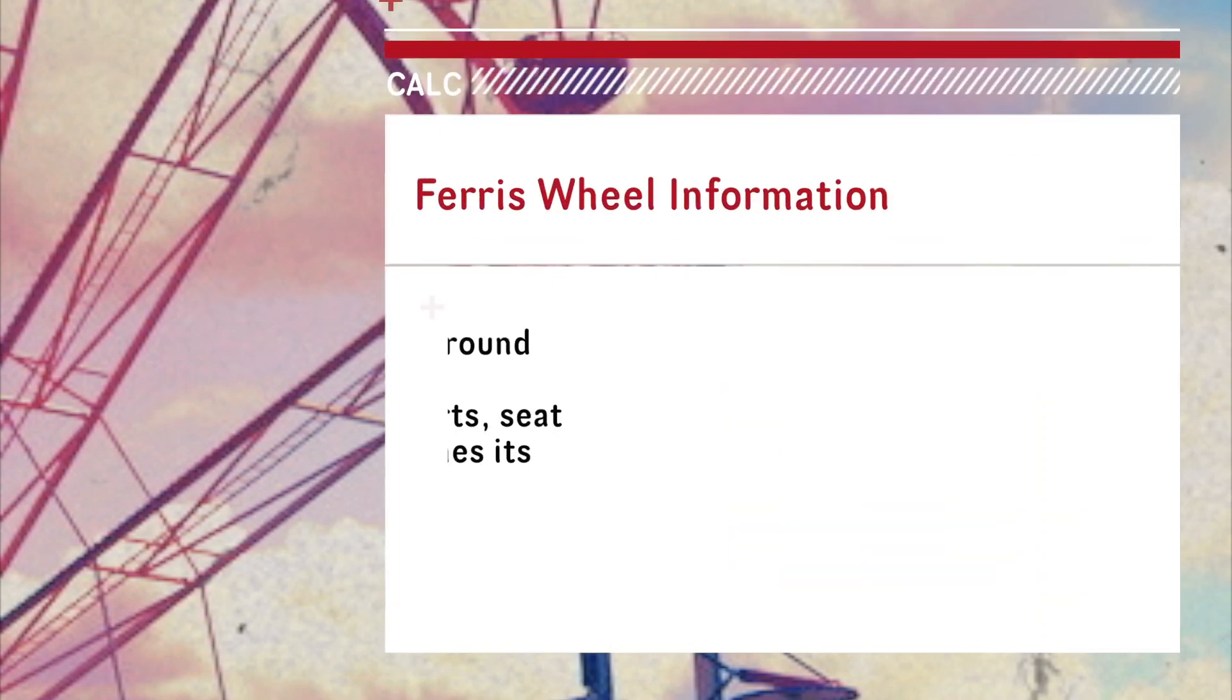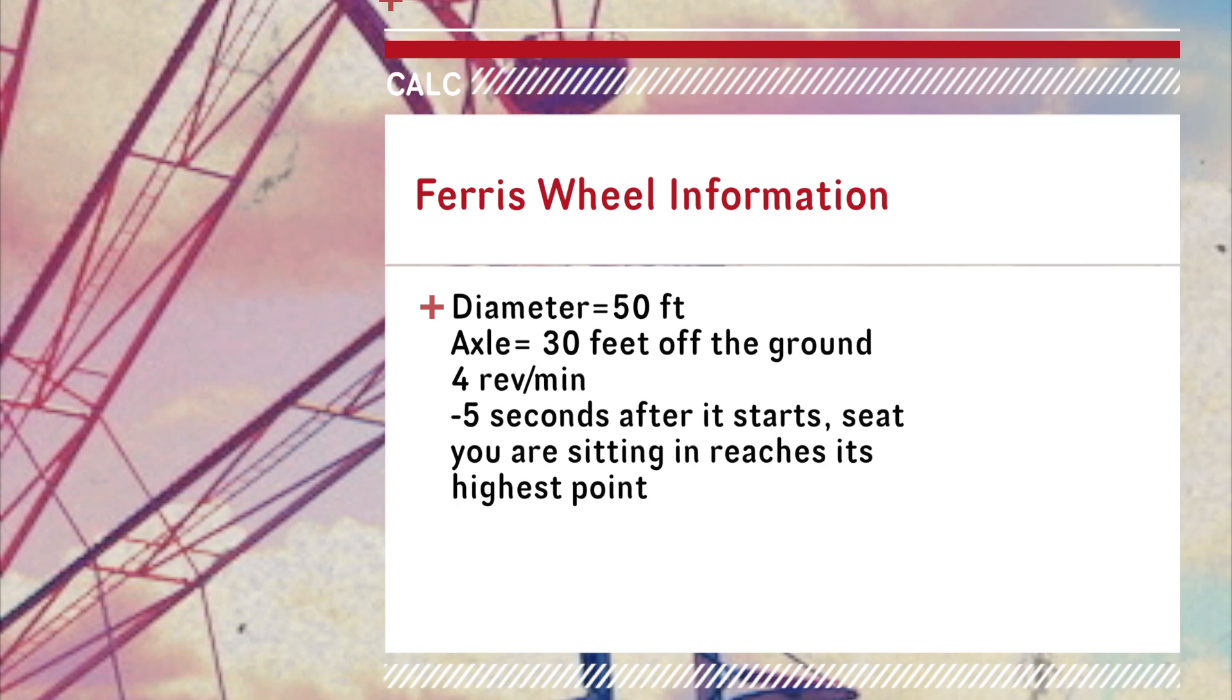And here is the information that you need to know about the Ferris wheel. Its diameter is 50 feet and its axle is 30 feet off the ground. It makes 4 revolutions per minute, and 5 seconds after it starts, the seat you are sitting in reaches its highest point.